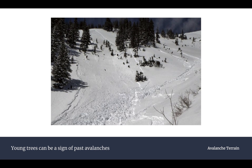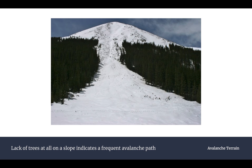Young trees are another vegetation clue. When trees get snapped and broken off by avalanches, they grow back smaller in the slide paths. You can see these smaller, younger trees indicating areas where avalanches have happened historically, letting you identify that this might not be a safe slope to ski.